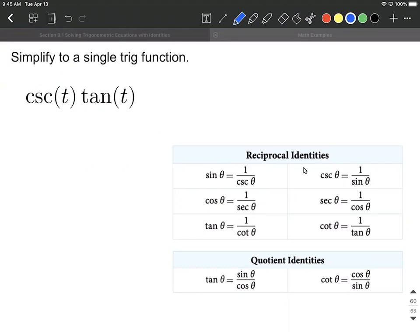So to do this we're going to use our reciprocal identities and our quotient identities for this particular one. So cosecant we can rewrite as you can see as 1 over sine.